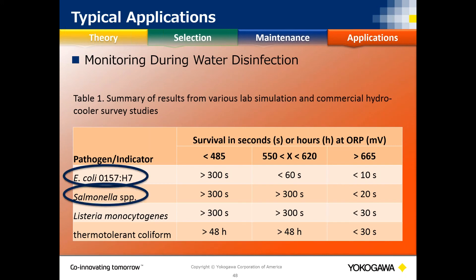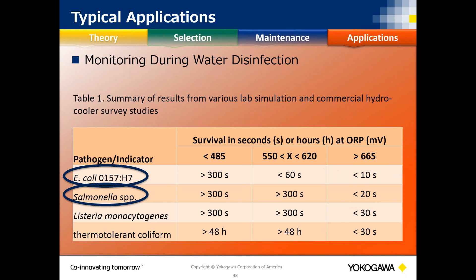ORP is also used for water disinfection — a critical step in minimizing the potential transmission of pathogens. Studies have shown that maintaining a certain ORP value for a certain amount of time will kill off certain pathogens. This is used not just in drinking water purification systems, but also in industrial washing machines for disinfection.